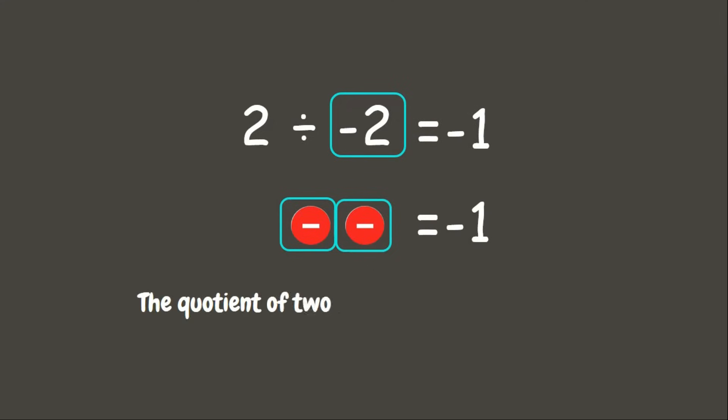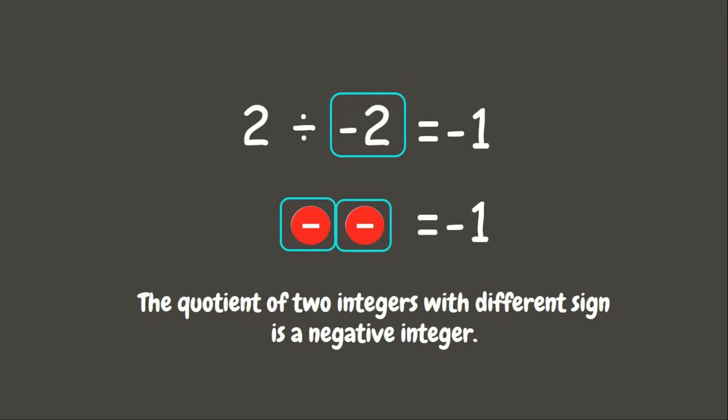As you can notice, when we are dividing two integers with different signs, the answer is a negative integer.